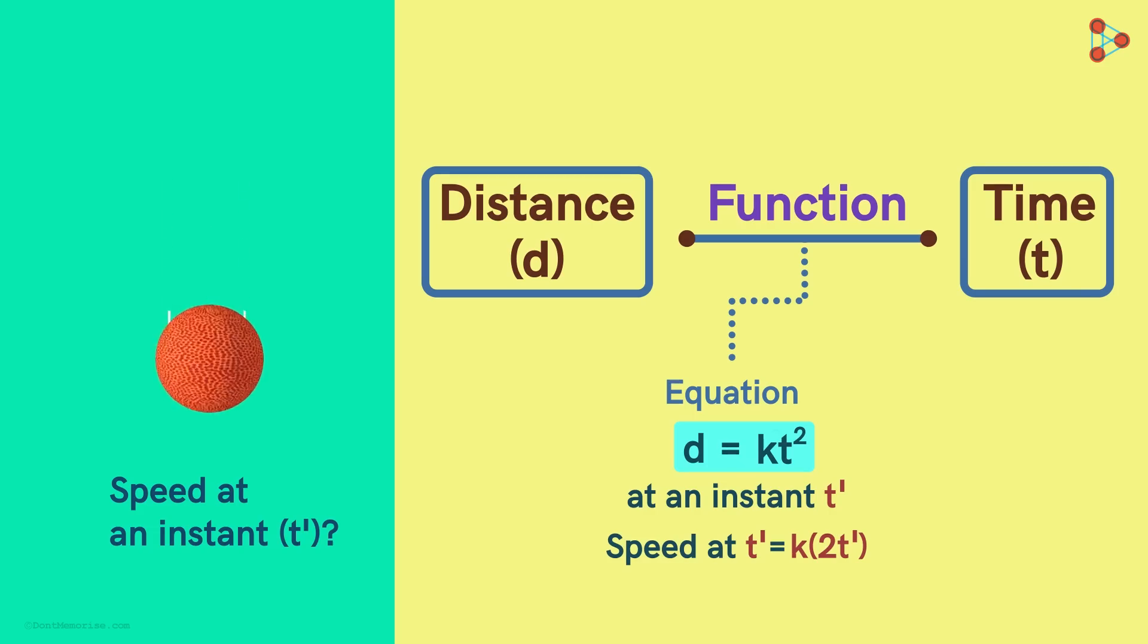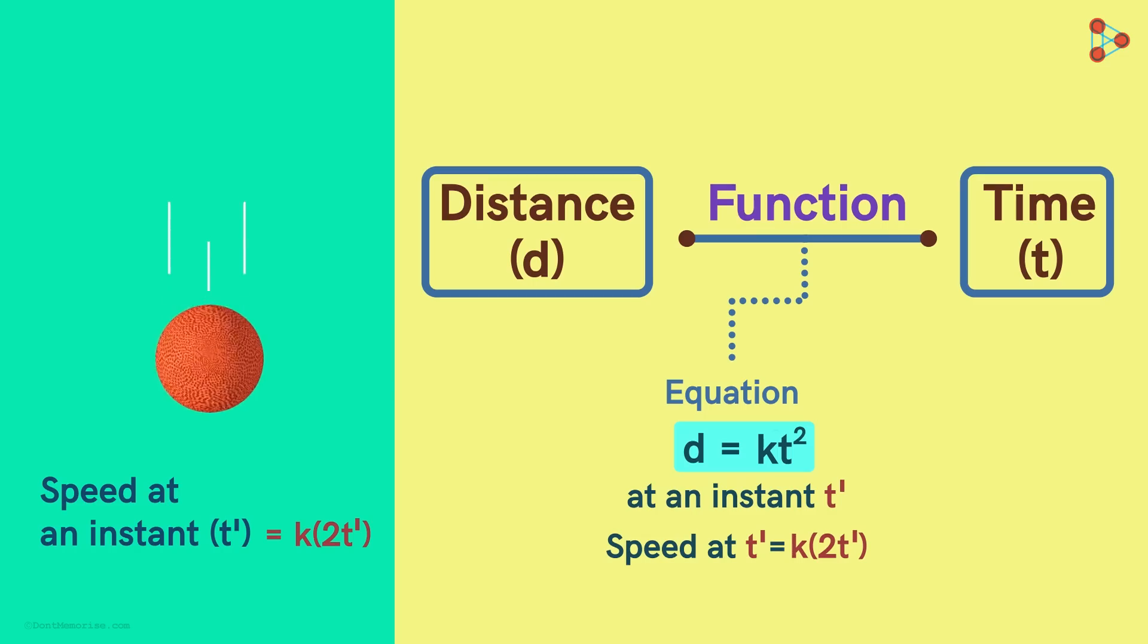So can you tell me the speed of any object falling towards the ground at any instant of time? That's correct. It will be equal to this. We see that knowing that an object moves according to this relationship, we can instantly find its speed at any instant.